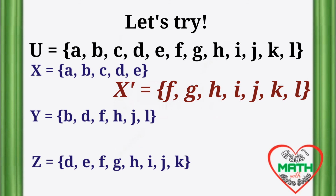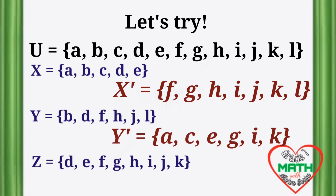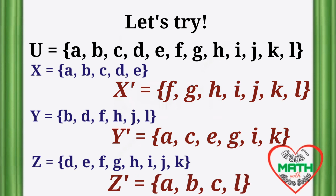X complement is equal to {F, G, H, I, J, K, L}. You can find these elements in the universal set U but not in set X. Y complement is equal to the elements {A, C, E, G, I, K}. And Z complement is equal to the elements {A, B, C, L}. These are the elements that can be found in the universal set U but not in set Z.